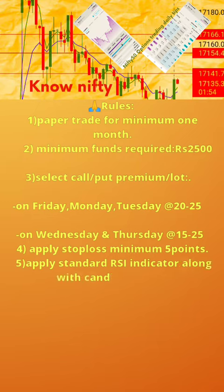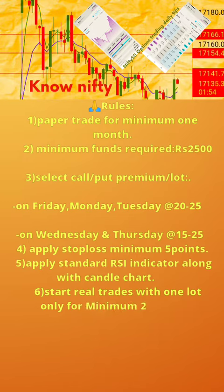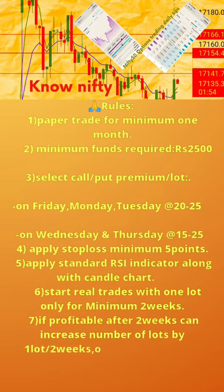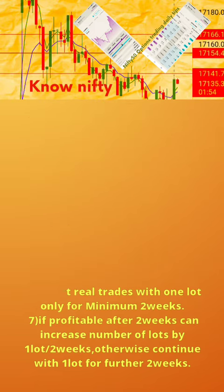5. Apply standard RSI indicator along with candle chart. 6. Start real trades with one lot only for minimum 2 weeks. 7. If profitable after 2 weeks, you can increase the number of lots by 1 lot for 2 weeks. Otherwise, continue with 1 lot for further 2 weeks.